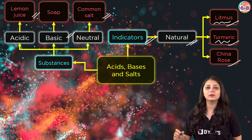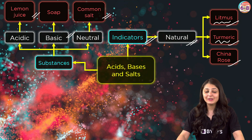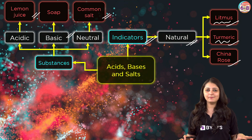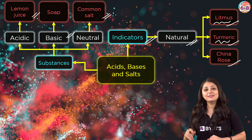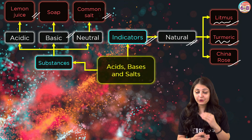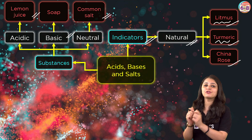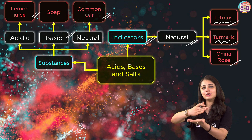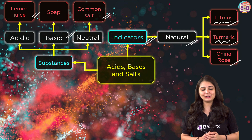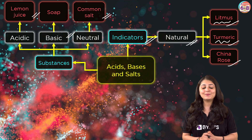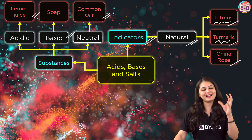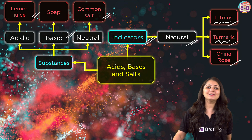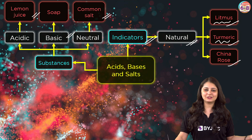Next is turmeric. To use turmeric as an indicator, it is generally mixed with water to form a paste, which is then put on blotting paper and dried to form thin strips of turmeric paper. It remains yellow in acidic medium and changes to red in basic medium.